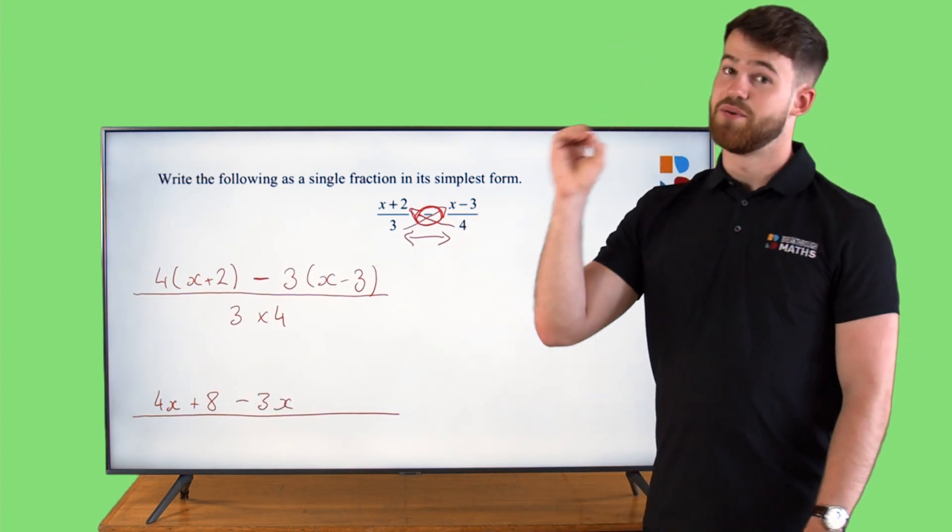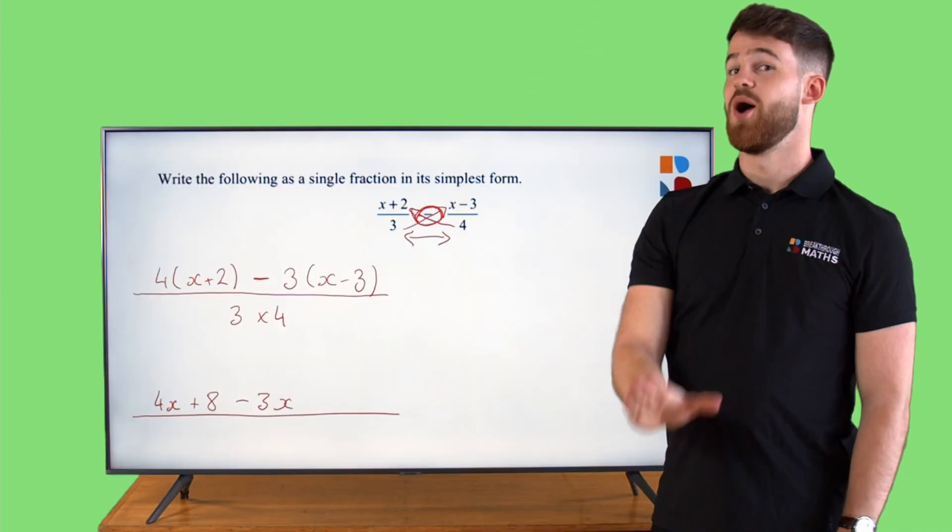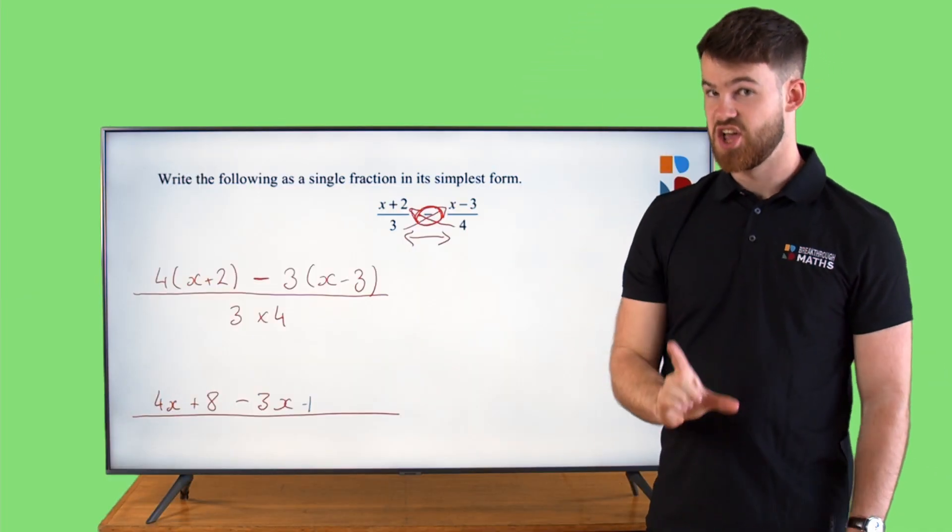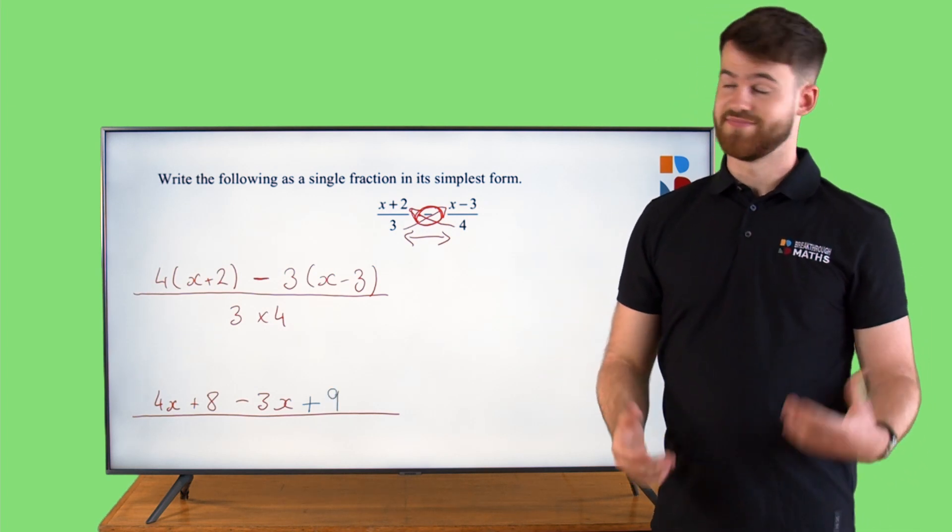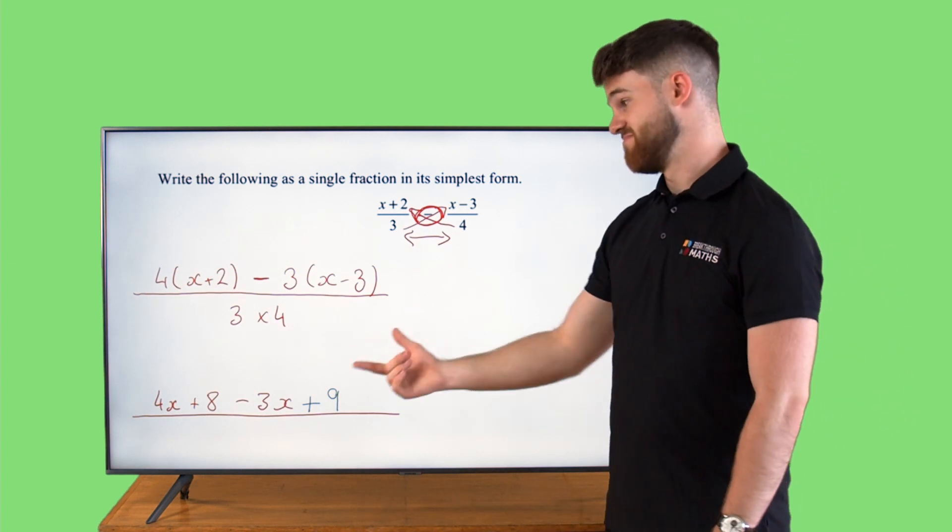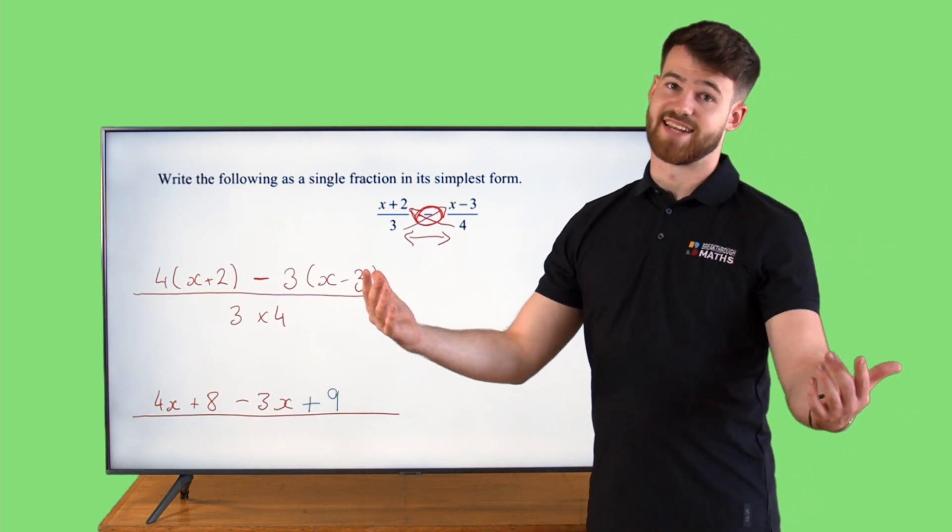Minus 3 multiplied by x will give us minus 3x. And minus 3 multiplied by minus 3, be very careful with this one, will give us a plus 9. Minus multiplied by a minus will leave us with a plus. Then on the bottom 3 multiplied by 4, that'll give us 12.